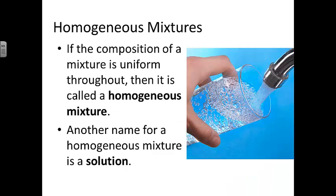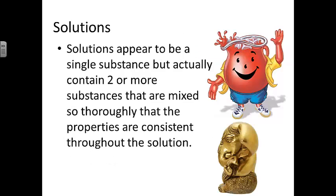When the composition of a mixture is uniform throughout, it's called a homogeneous mixture. There's actually another word for these types of mixtures — homogeneous mixtures are also known as solutions. Solutions appear to be a single substance, but actually they contain two or more substances mixed so thoroughly that the properties are consistent throughout the solution.